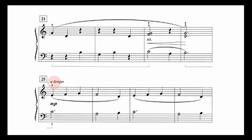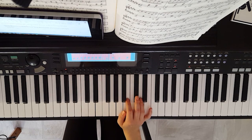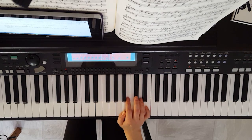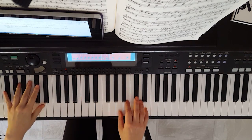The other term I want to talk about today is a tempo, which is almost always associated with ritardando. What this means is the original tempo or speed — so whatever tempo you were playing before you started slowing down, you resume when you see a tempo. I'm going to do a ritardando again on the same song, then an a tempo afterwards, so you can hear how it bounces back to the original tempo.